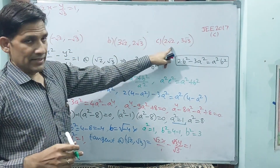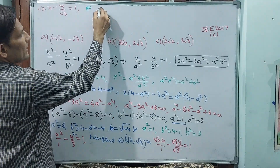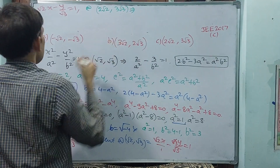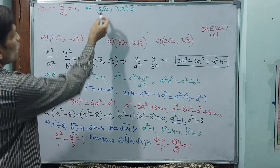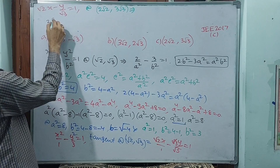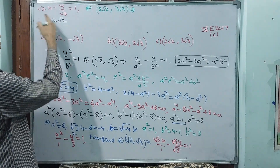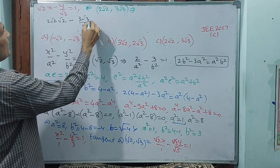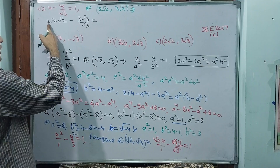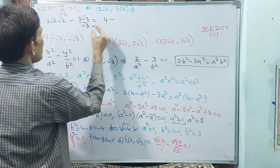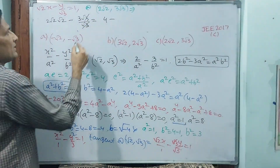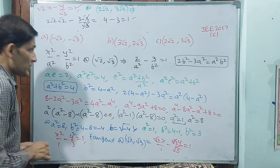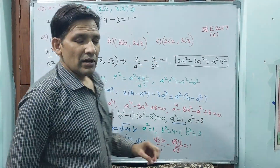Now substitute point C which is (2 root 2, 3 root 3). We get: 2 root 2 times root 2 minus 3 root 3 by root 3. That gives 2 times 2 which is 4, minus root 3 over root 3 cancels giving 3, so 4 minus 3 equals 1. LHS equals RHS, confirming point C is the correct answer.